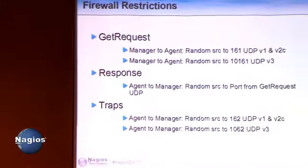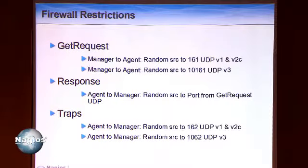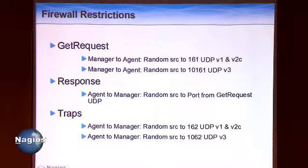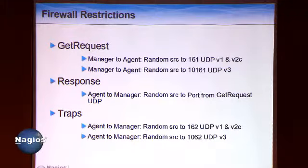For firewall configuration: port 161 is what you're using for GETs and responses. If you're using version 3 and cryptography specifically, it will use 10161 instead of 161. TRAPs use 162 or 10162. Pretty simple to add the right rules for that.